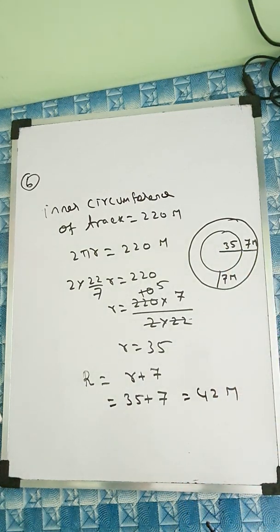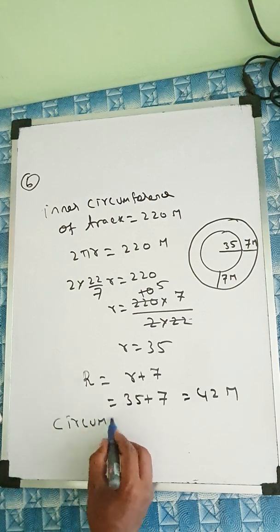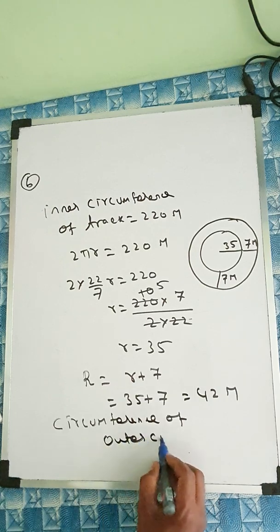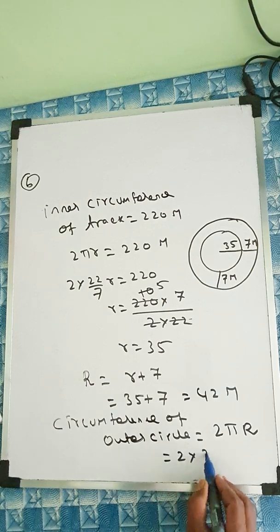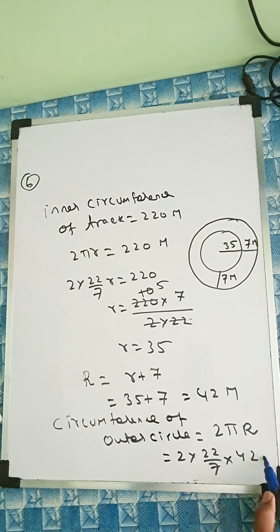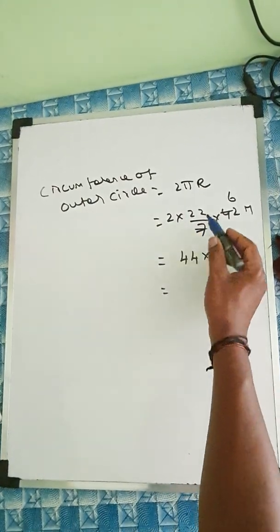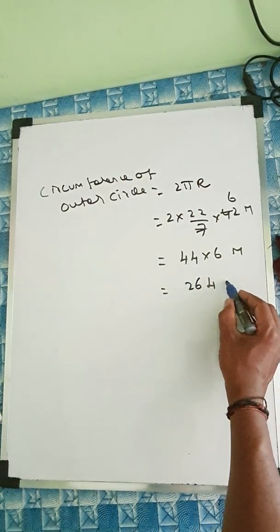Calculate the cost of putting up a fence along the outer circle at the rate of 2 rupees per meter. That means you will find circumference of outer circle now. Circumference of outer circle, that means 2π capital R. 2 into 22 by 7 into capital R is given, we got 42. We can cancel this one. 7, 6, or 42. We will multiply this three number. 2 into 22 is 44 and into 6. 6 for the 24 remain 2. 6 for the 24 is 264 meter.